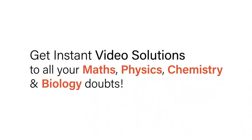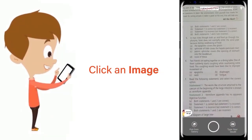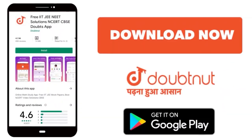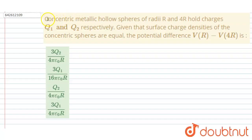With Doubtnut, get instant video solutions to all your math, physics, chemistry, and biology doubts. Just click the image of the question, crop the question, and get instant video solution. Download Doubtnut app today. Hello everyone, concentric metallic hollow spheres of radius r and 4r holds charges q1 and q2 respectively.